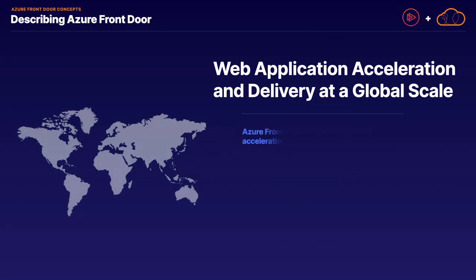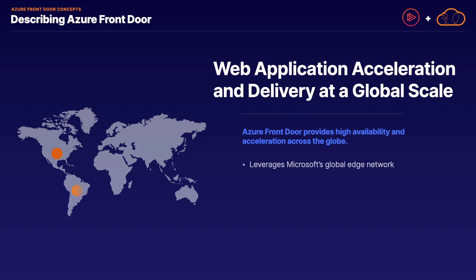Azure Front Door provides high availability and acceleration across the globe, leveraging Microsoft's global network to provide load balancing using edge locations on Microsoft's backbone. Web applications are the name of the game here — Azure Front Door is designed specifically for load balancing web applications at a global scale. Whereas Application Gateway provides web application load balancing at layer seven at a regional scale, Azure Front Door is our global load balancing layer seven solution.